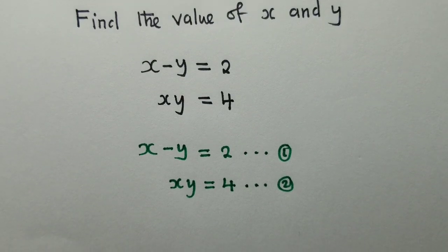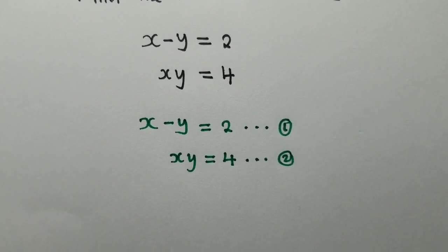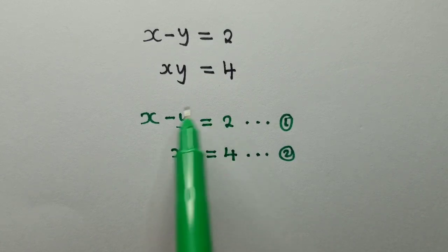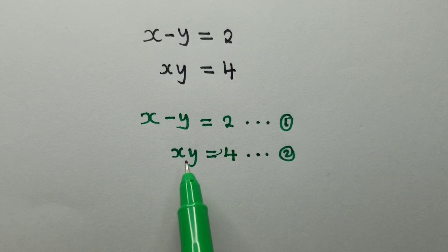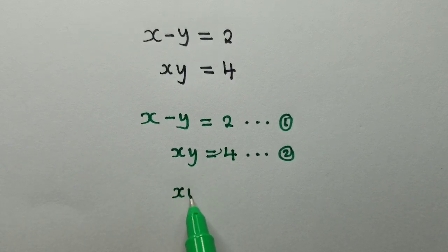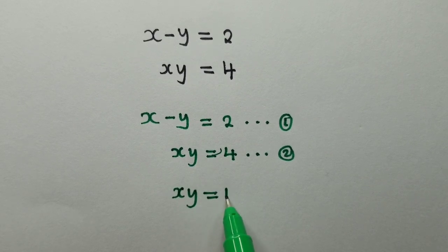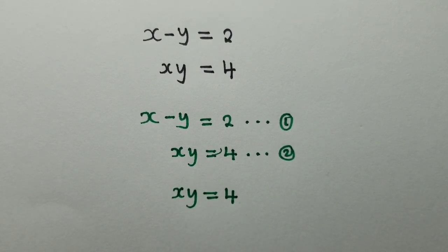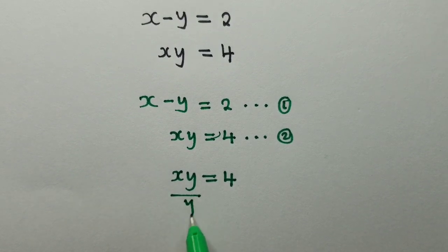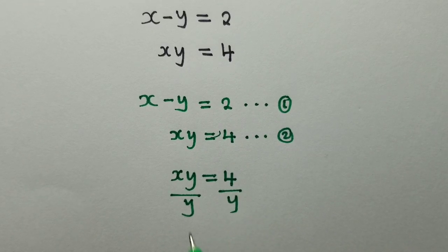So we have to solve these two equations simultaneously. We can either pick the first one or the second one, whichever we want to work with. So let me pick the second one, which is xy equals 4. I'm going to make x subject of the formula. To make x subject of the formula, I must divide by y throughout so that I remain with x only.